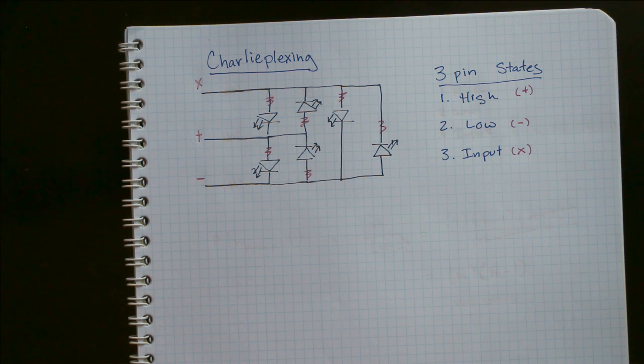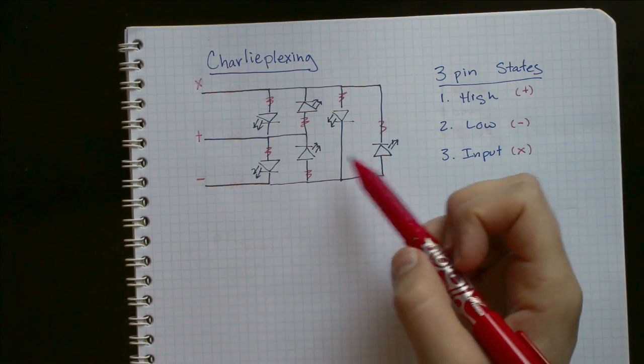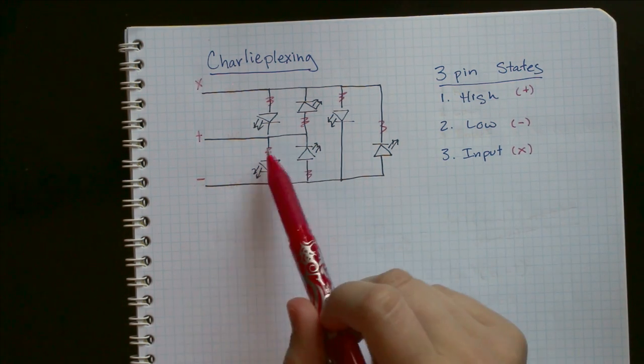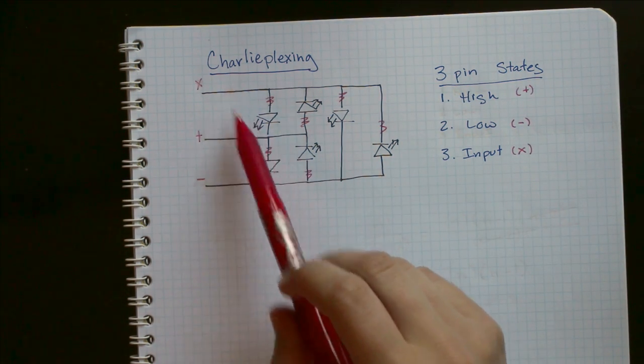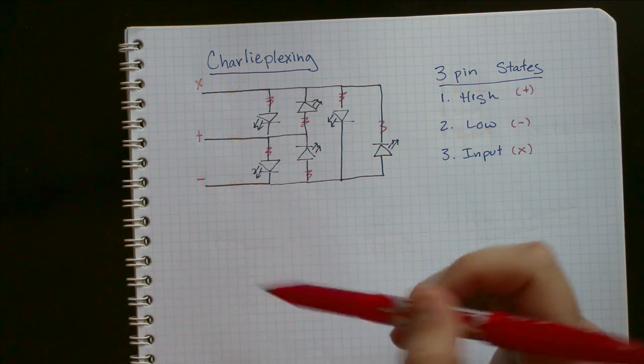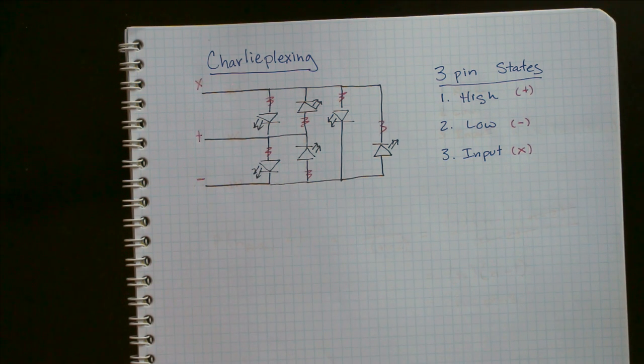So the last thing that's useful to know about Charlieplexing is the maximum number of LEDs that can be individually controlled based on how many pins you have. And that's a relatively simple equation. It's basically the permutation of n pins taken two at a time.